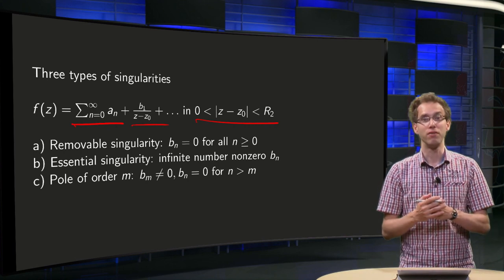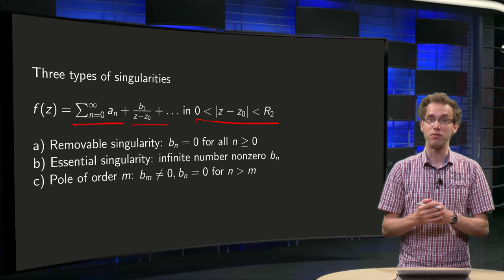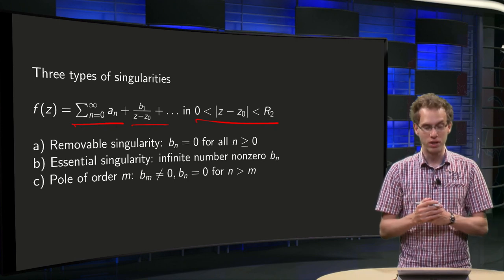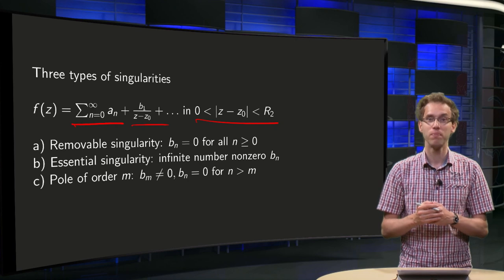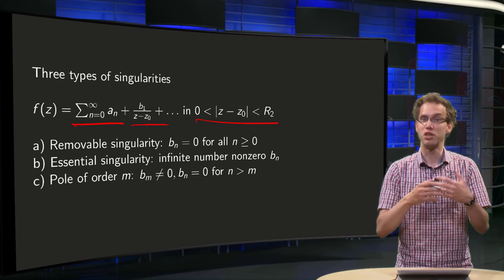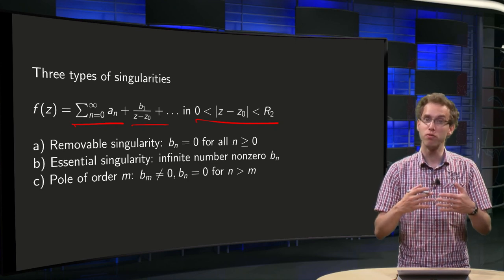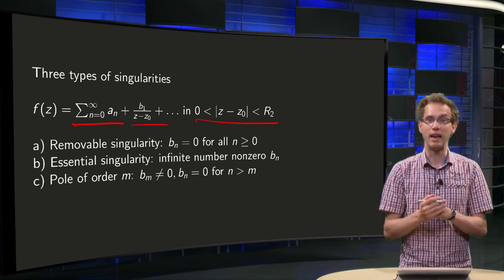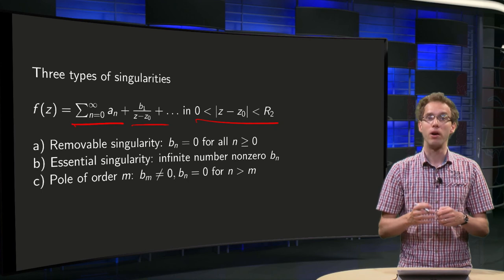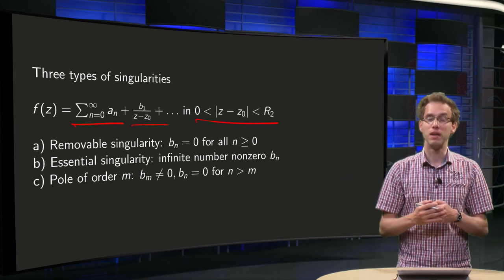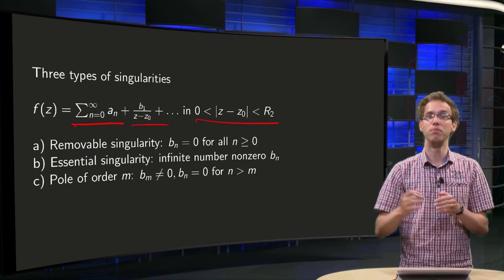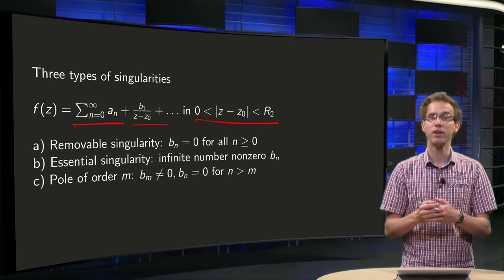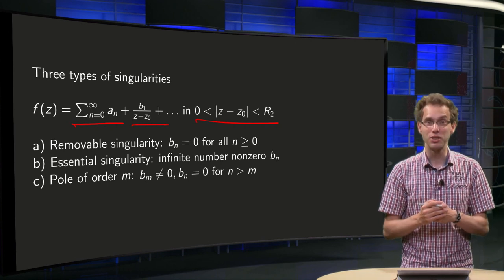This function f can have three different types of singularities. First, it's called a removable singularity — there is basically no singularity at all; it can be removed because all the bₙ are 0, so there is only an analytic part. Or at the opposite extreme, you have an infinite number of bₙ's — the negative powers go on and on — and you have what's called an essential singularity.